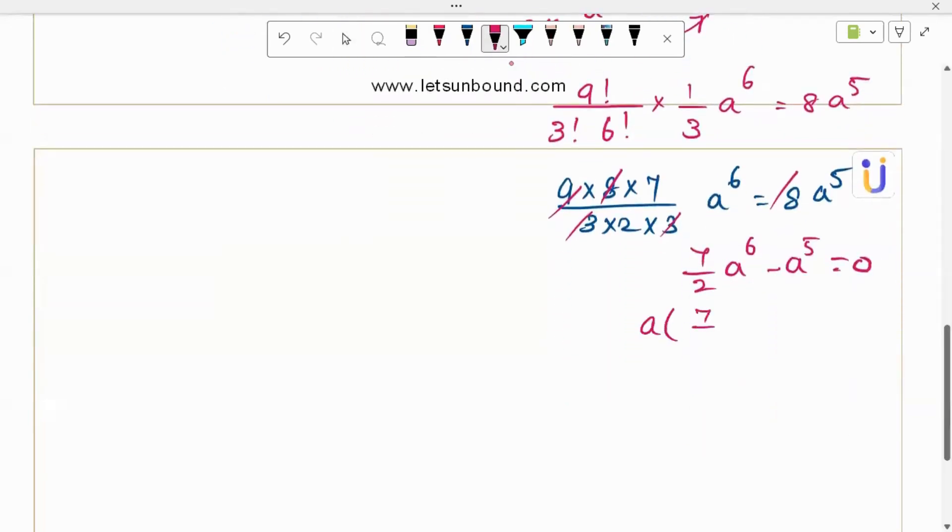So take a common. 7 by 2 a minus 1 equals 0. a is 1 answer. And 7 by 2 a minus 1 equals 0 is another answer.